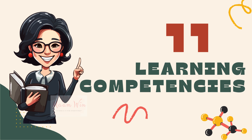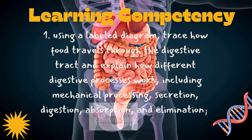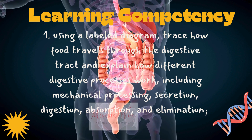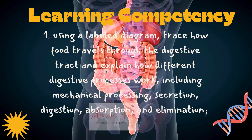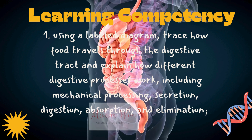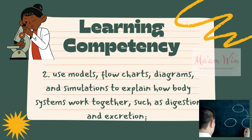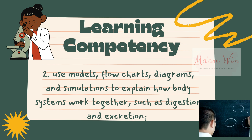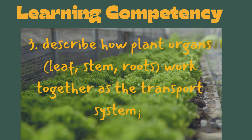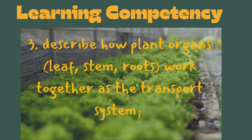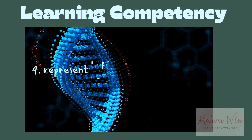Here are the 11 learning competencies for this quarter. No. 1 Using a labeled diagram, trace how foods travel through the digestive tract and explain how different digestive processes work, including Mechanical Processing, Secretion, Digestion, Absorption, and Elimination. No. 2 Use Models, Flow Charts, Diagrams, and Simulations to explain how body systems work together. No. 3 Describe how plant organs — leaves, stems, and roots — work together as the transport system.